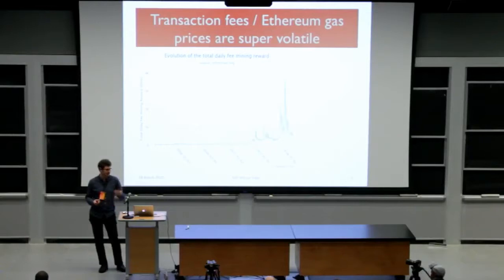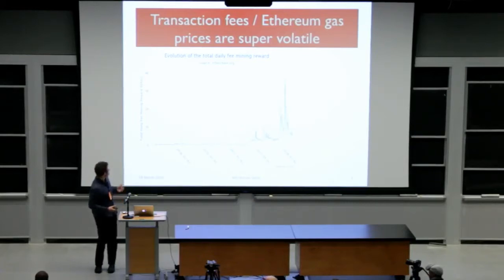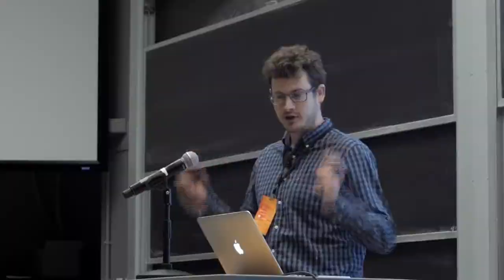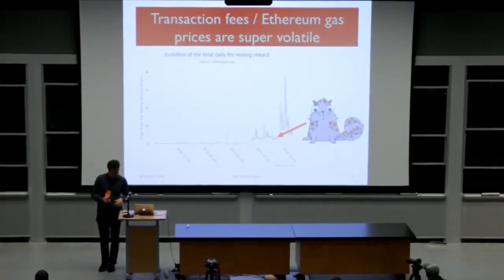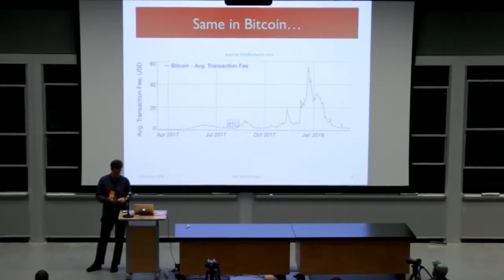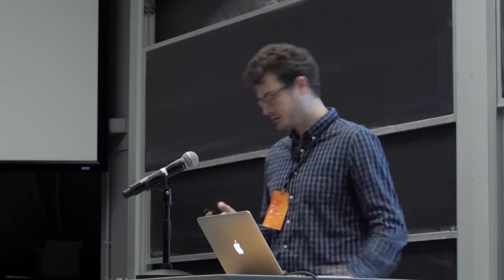This chart shows that in Ethereum the average mining reward in blocks is directly correlated to transaction fees, and over time this can vary by roughly a factor of 40x to 50x. One particular thing that caused one of these huge spikes was the CryptoKitties craze a few months ago. This isn't just something that happens in Ethereum - other cryptocurrencies like Bitcoin surprisingly have a transaction fee graph that very closely mirrors each other between currencies.